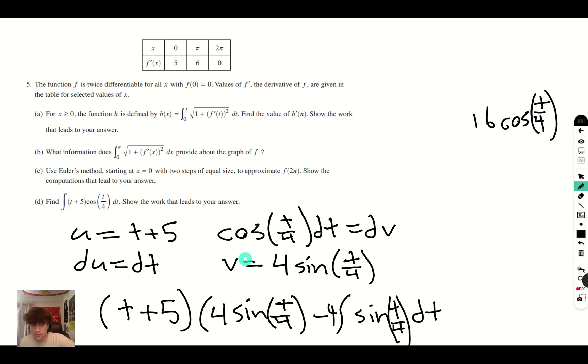Add that to the first part of our answer, which is (t + 5)4sin(t/4) plus this. And don't forget to add your plus C as well. And there you go. There is your answer for that integral.